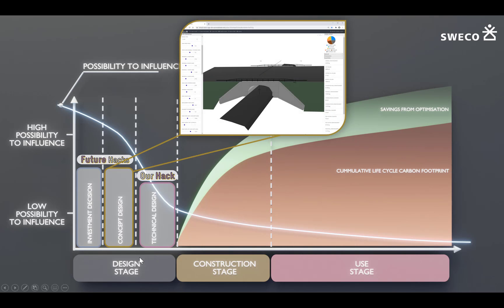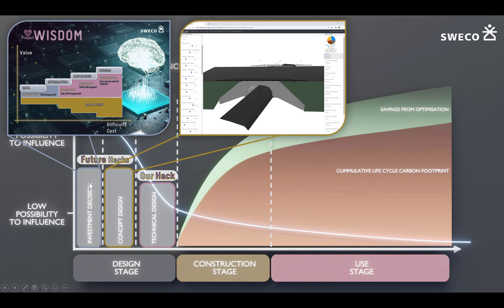For example, in the conceptual design phase we could use Sweco's parametric design ecosystem, which allows you to quickly check different design options and calculate the carbon footprint for each. Then in the investment decision phase we could connect the system to the Project Wisdom ecosystem, which would bring a predictive component to this process. It could use collected information and apply predictive analytics and machine learning to add value — giving recommendations on how to do things in a more sustainable way.